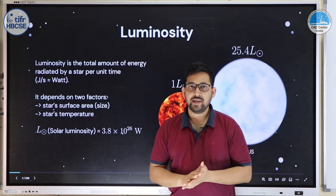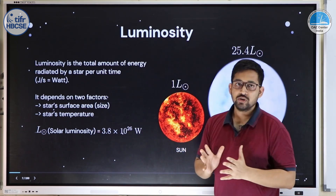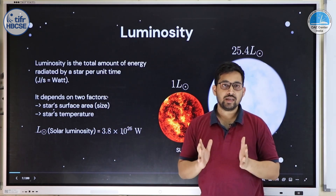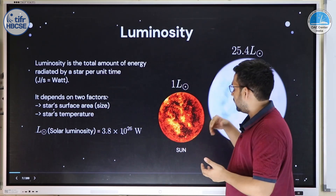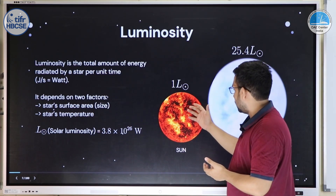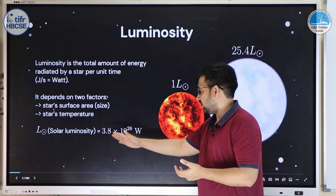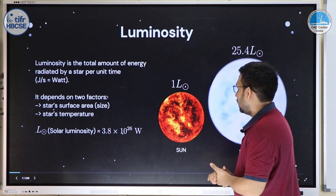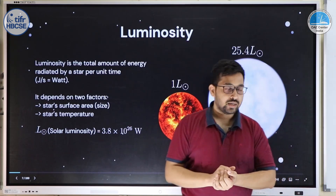Before we dive in, we need to understand a few basic terms. Luminosity is how much energy a star radiates per unit time — it has the same units as power. The Sun radiates energy continuously through nuclear fusion; what the Sun emits per unit time is called solar luminosity, roughly 3.8 × 10²⁶ watts. The star Sirius is much larger and brighter than the Sun — 25 times the brightness — but appears much fainter because it is really far away.